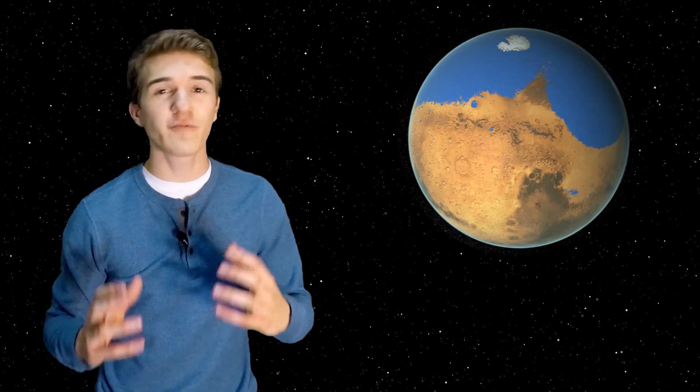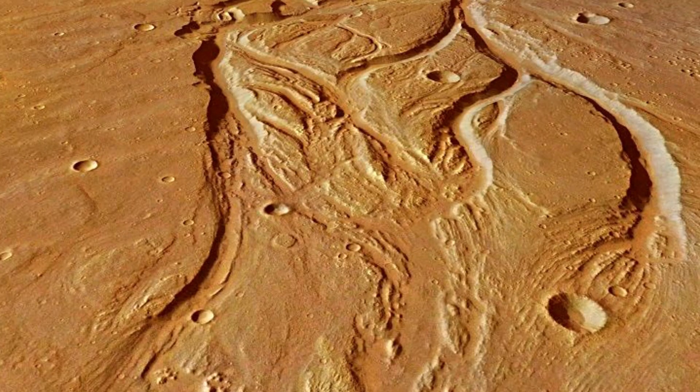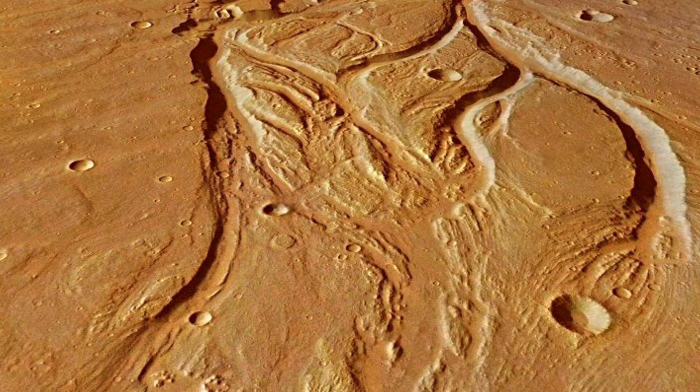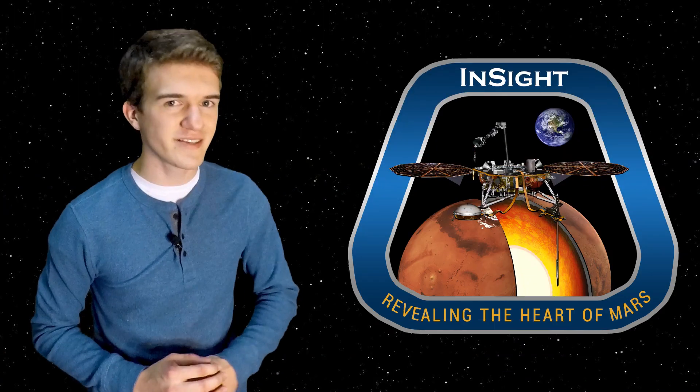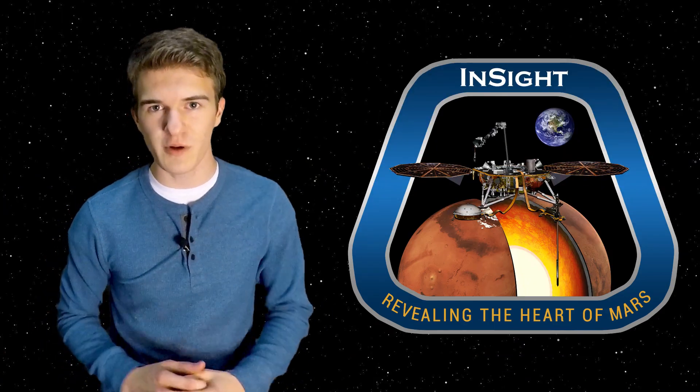Mars, as of right now, is uninhabitable to humans, and this is pretty obvious because it's too cold and there isn't enough air for us to breathe. However, scientists believed in the past that it wasn't always like this. In fact, if we look at the surface, we see what appears to be dried up lakes and possibly riverbeds. So what happened to the planet? This is one of the questions that InSight is trying to answer with its experiments on board.